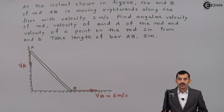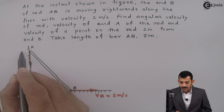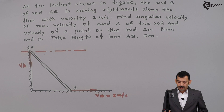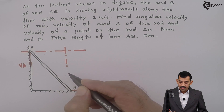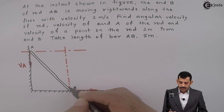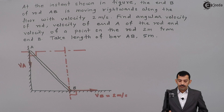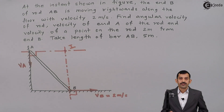On a rigid body, you know the directions of linear velocities of two points. To find the center of rotation — that is the ICR — we draw perpendiculars to VA and perpendicular to VB. If we draw perpendicular to VA, which is vertical, we get a horizontal line. Perpendicular to VB, which is horizontal, gives a vertical line. The point of intersection of these two perpendiculars represents the center of rotation, point I — the ICR. This angle is 90 degrees, and here this angle is also 90 degrees.